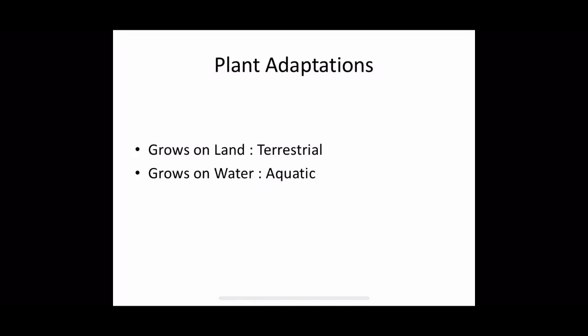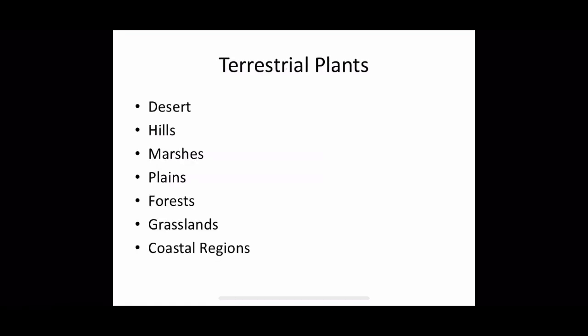Adaptation in plants — plants are divided into two major groups: one is terrestrial and another is aquatic. Terrestrial means plants that grow on land, and aquatic plants means plants that grow in water. These terrestrial plants are found in different types of habitats: deserts, hills, marshes, plains, forests, grasslands, and coastal regions.